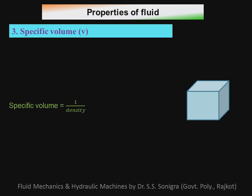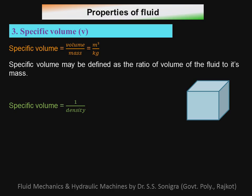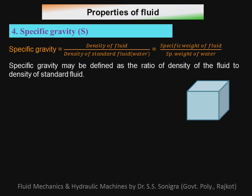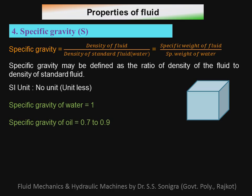Specific volume is the inverse of density, defined as the ratio of volume to mass. Its SI unit is meter cube per kilogram. Specific gravity is the ratio of the density of a fluid to the density of a standard fluid (water), or the ratio of specific weight of a fluid to specific weight of water. It has no unit. Specific gravity of water is 1, oils range from 0.7 to 0.99, and mercury is 13.6.